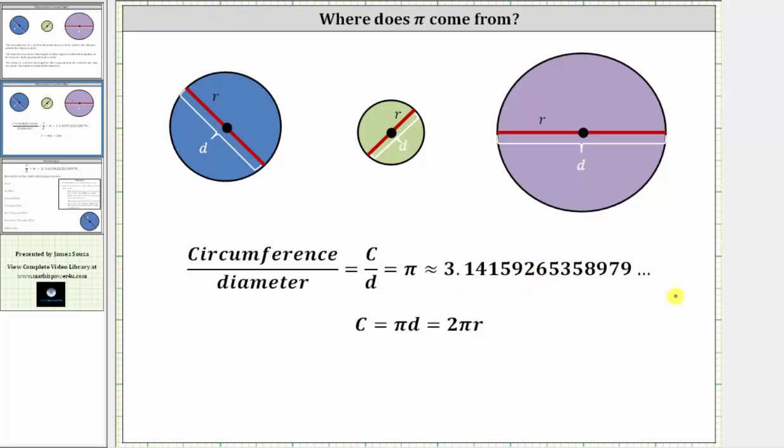And then finally, since the circumference divided by the diameter is equal to pi, if we take this formula and solve for the circumference by multiplying both sides of the equation by d, we get the formula for the circumference of a circle, where the circumference of a circle is equal to pi times d, or pi times the diameter.